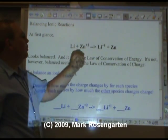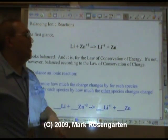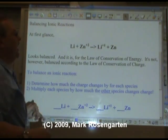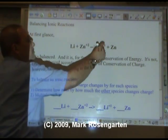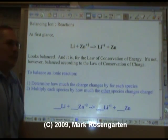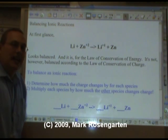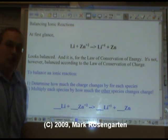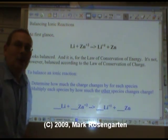Same thing here. One lithium, one lithium, one zinc, one zinc. Everything looks good except we've got plus two on this side and plus one on that side. What we need to do is balance this in such a way that the charges add up to the same thing on both sides. Does this look familiar? It should. We've been doing it all year long.